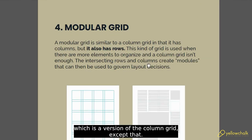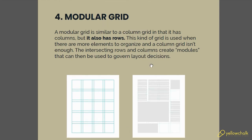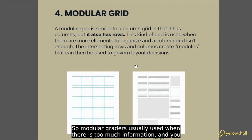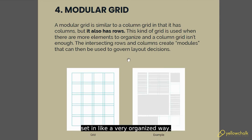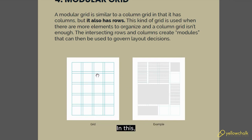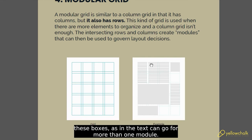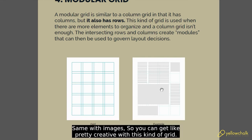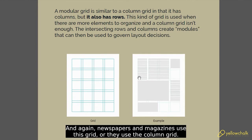Then we have the modular grid, which is a version of the column grid except that it also has rows. It is usually used when there is too much information and you want to organize it in a very structured way. Each block is called a module — that's why it's called a modular grid. There is no particular rule about following these boxes; text and images can span more than one module, so you can get pretty creative. Newspapers and magazines use this grid or the column grid.